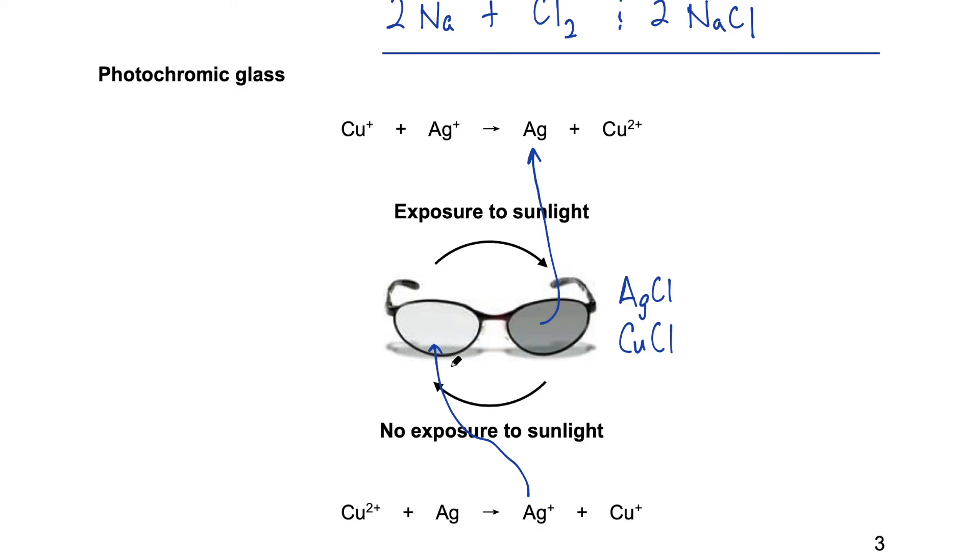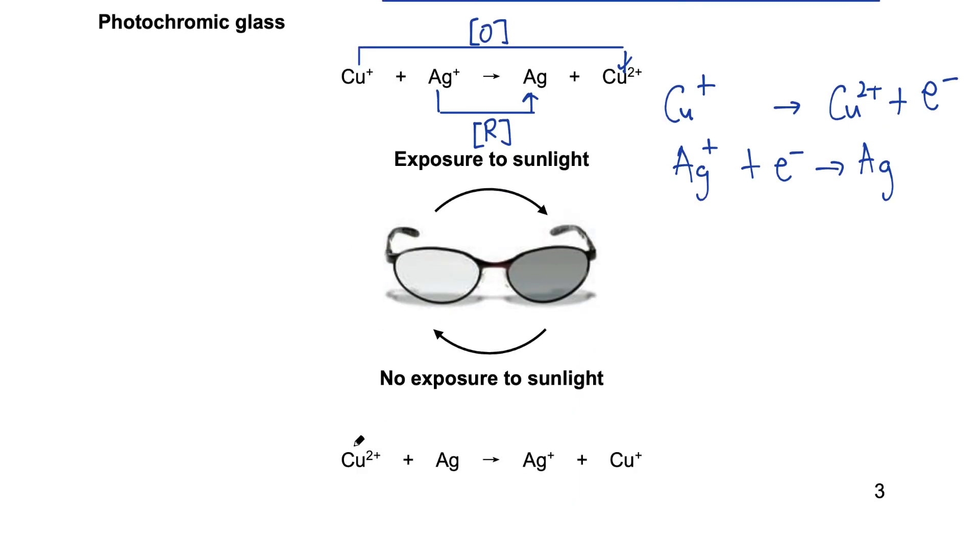So now I want you to take a look at both equations. Can you identify what is the substance reduced and what is the substance being oxidized? So we have, let's take a look at the copper one ion Cu plus. The copper ion becomes a copper two ion by losing an electron. And the silver ion gains an electron to form silver. The copper one ion is being oxidized and the silver ion is being reduced. In the bottom equation, the copper two ion is being reduced as it gains electron, while the silver atom is being oxidized as it loses electron.